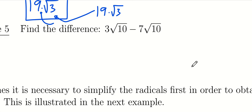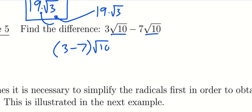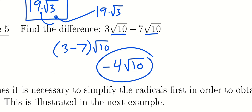For the subtraction example: 3√10 minus 7√10 — these are like radicals, so we combine the coefficients: 3 − 7 = −4. The answer is −4√10.